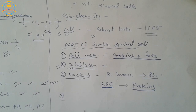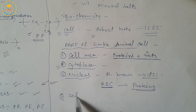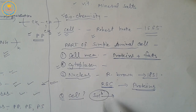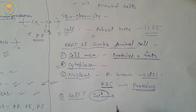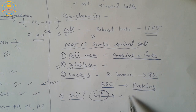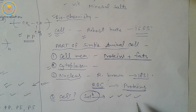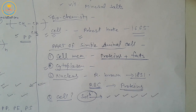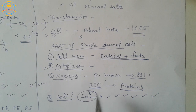Now we take a question for exercise: write the chemical composition of the cell. The solution is that a cell is chemically composed of carbohydrates, fats, vitamins, proteins, minerals, water, and various organic and inorganic substances.